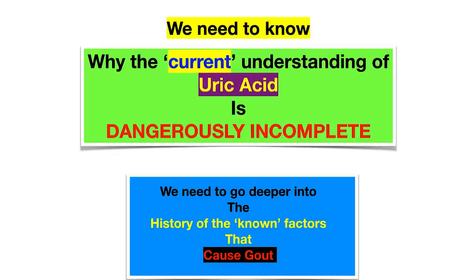We need to know why the current understanding of uric acid is dangerously incomplete — my words, dangerously incomplete. You might say it's a little on the naive side, hyper-simplistic, as is most of conventional medicine. We're going to go into some details, come up with a conclusion, and establish a framework of understanding so we can move the bigger factors — what I call the chessboard pieces — around.